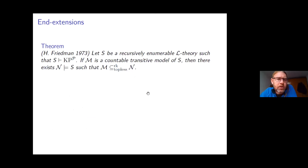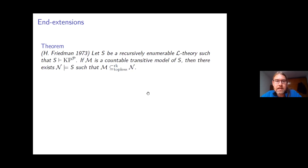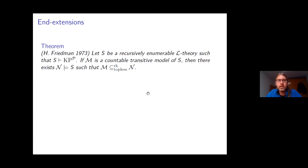What do we know about end extending models of set theory? Harvey Friedman completely classified the countable transitive structures realisable as the standard sets of non-standard models of KPP. His classification shows: if S is a recursively enumerable L-theory containing KPP, and M is a countable transitive model of S, then there exists a topless rank extension N of M satisfying S. So every countable transitive model of KPP has a topless rank end extension.